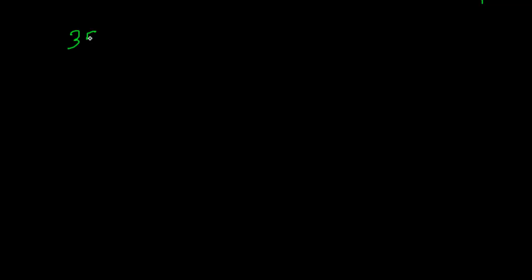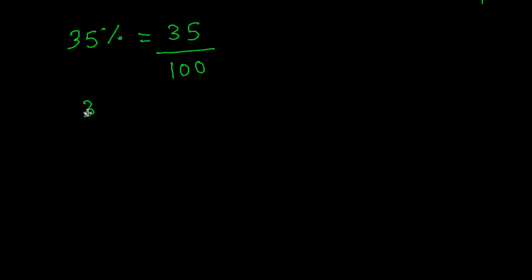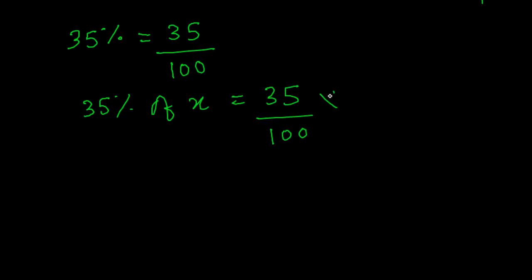Now suppose you are given something in the form of percentage, let us say thirty-five percent. If you want to remove this sign, you write it as thirty-five by hundred. That is because when you write percentage, you actually mean it is per hundred — for each hundred, there will be thirty-five units. Usually percentage is related to some quantity, like thirty-five percent of x, which equals thirty-five by hundred into x.